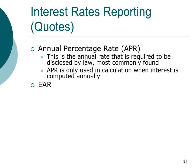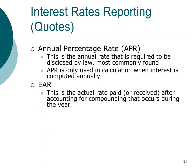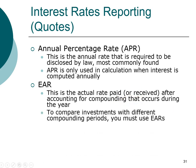An interest rate closely related to the APR is called the EAR, which stands for Effective Annual Rate. It's called the effective annual rate because this is the actual interest rate that you end up paying or receiving after you take into account compounding. The EAR is particularly important when comparing different investments or loans that have different compounding periods.